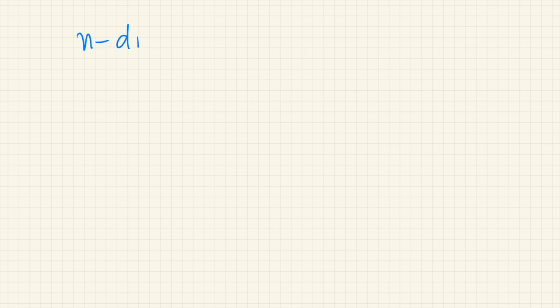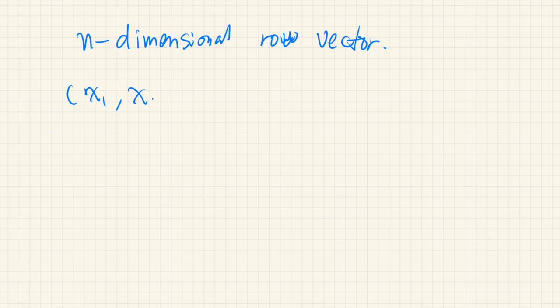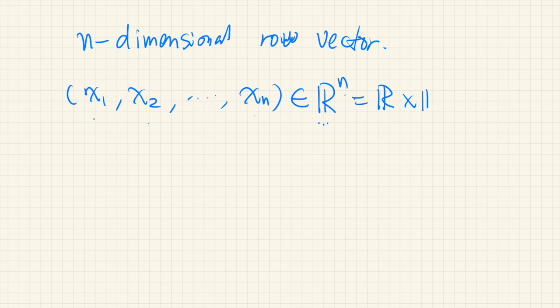We first define an n-dimensional row vector. It is just an n-tuple of real numbers — an ordered set of n real numbers x1, x2, ..., xn. So it's an element of n-dimensional real space ℝⁿ. The notation ℝⁿ means the Cartesian product of the set of real numbers combined n times.